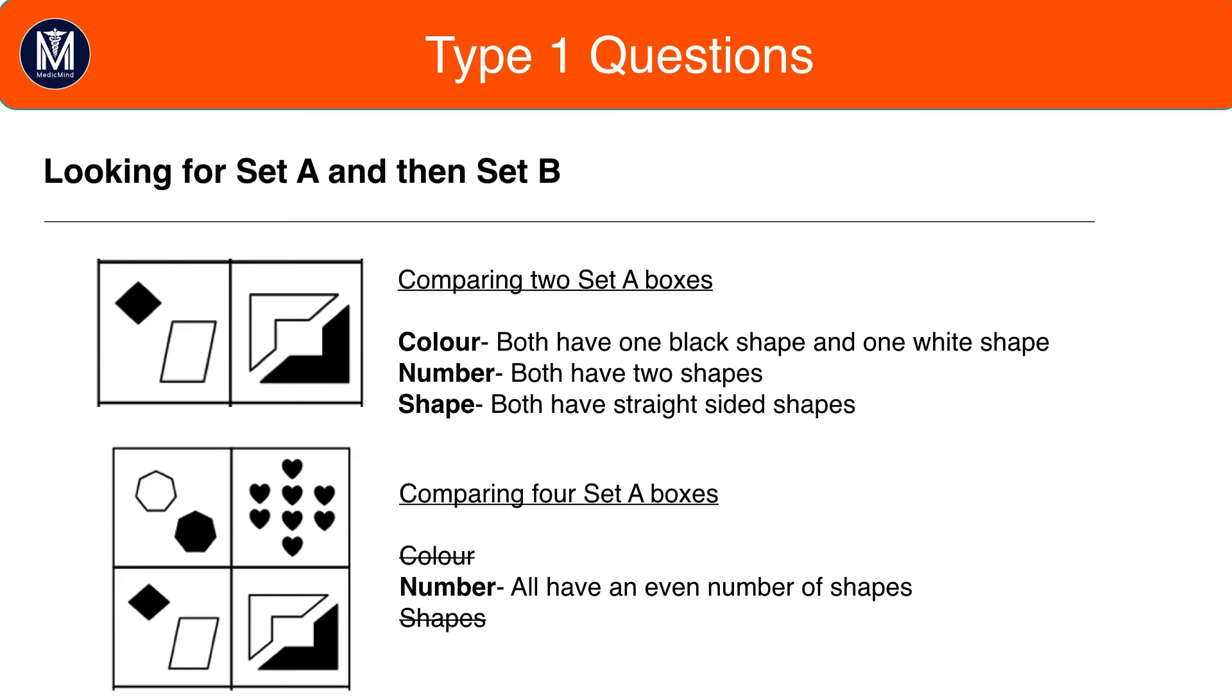Color. The heart box means that our color pattern is gone, because that heart box has only black shapes. The heart box also means that our straight sided shape pattern is gone. So, that leaves us with just number.